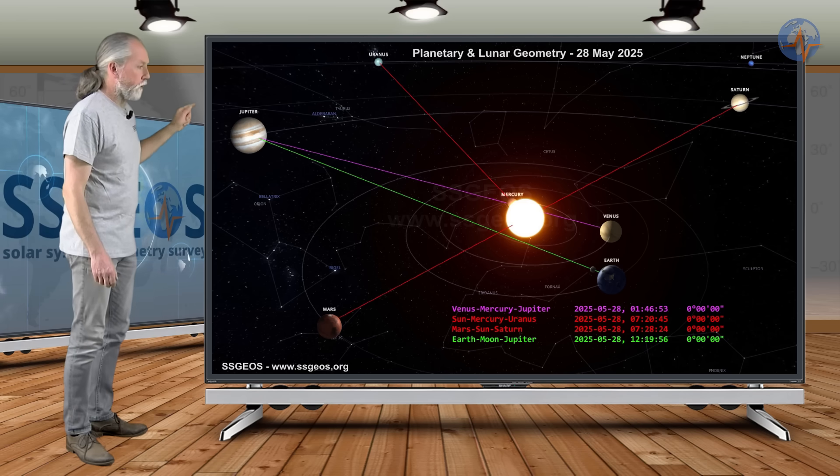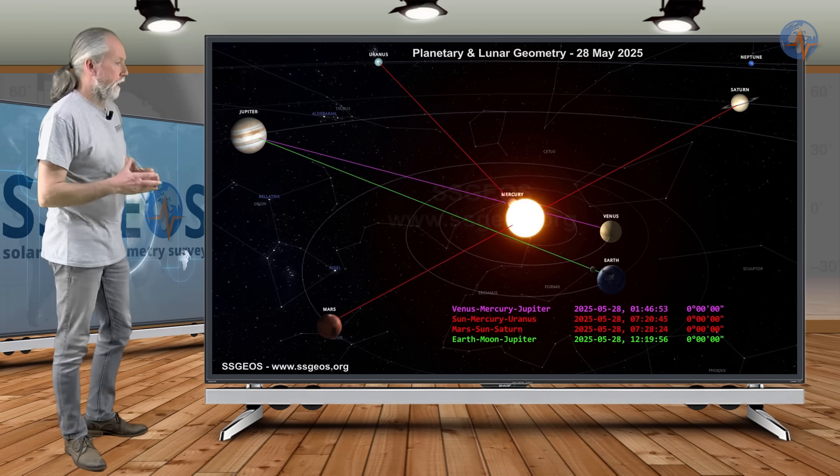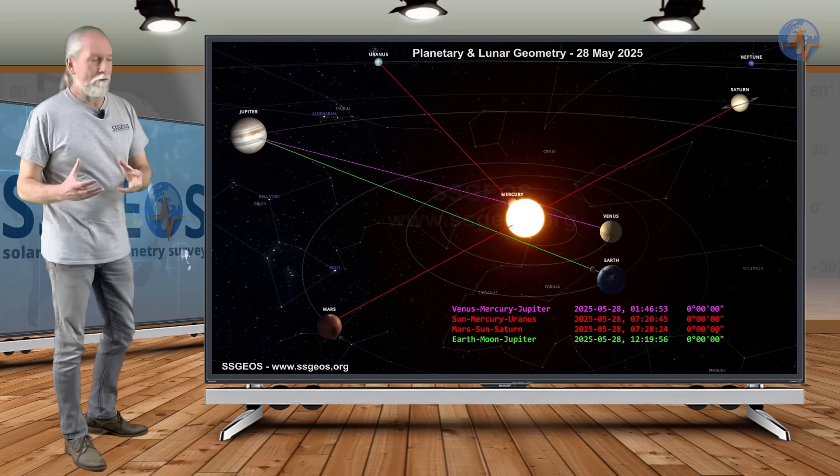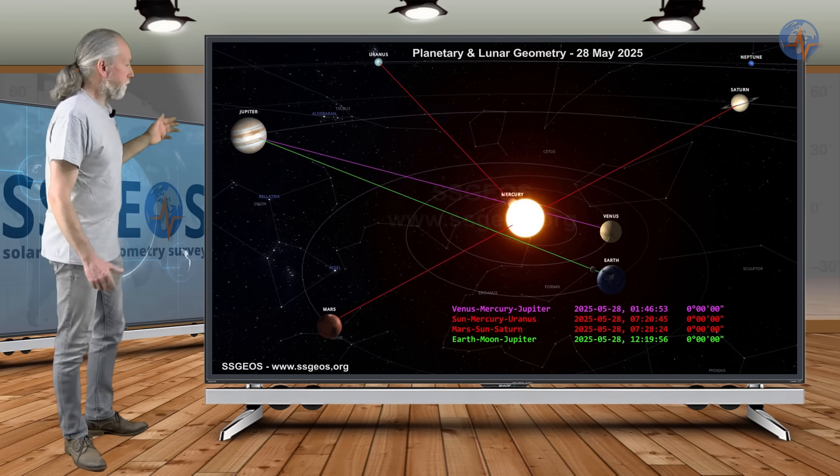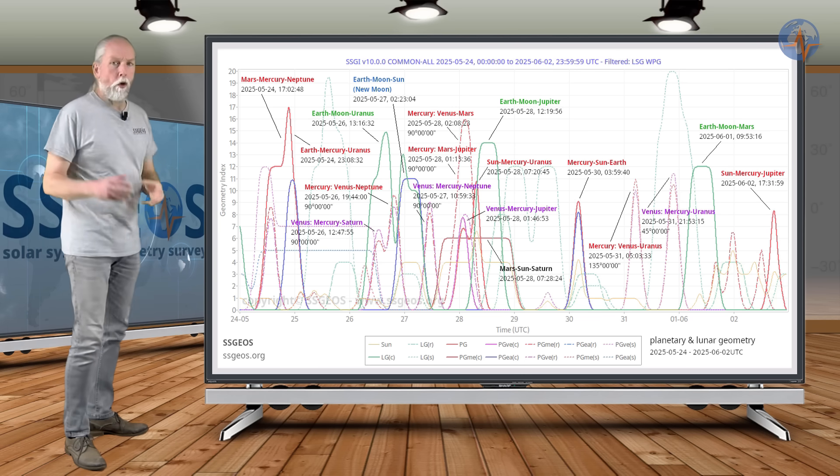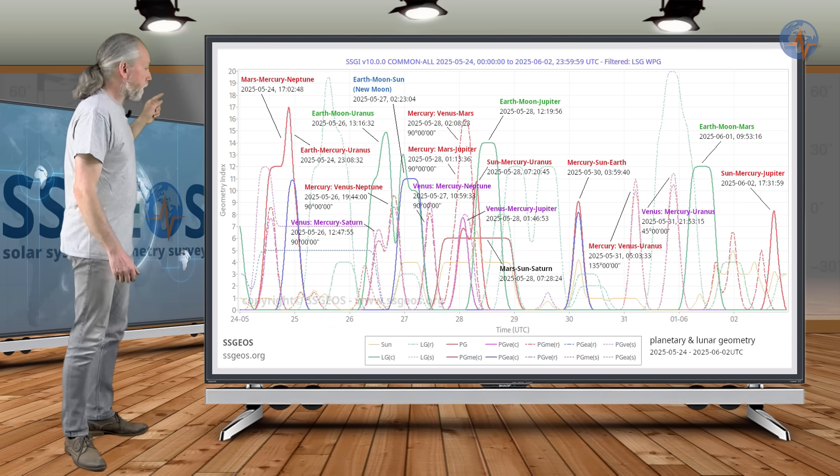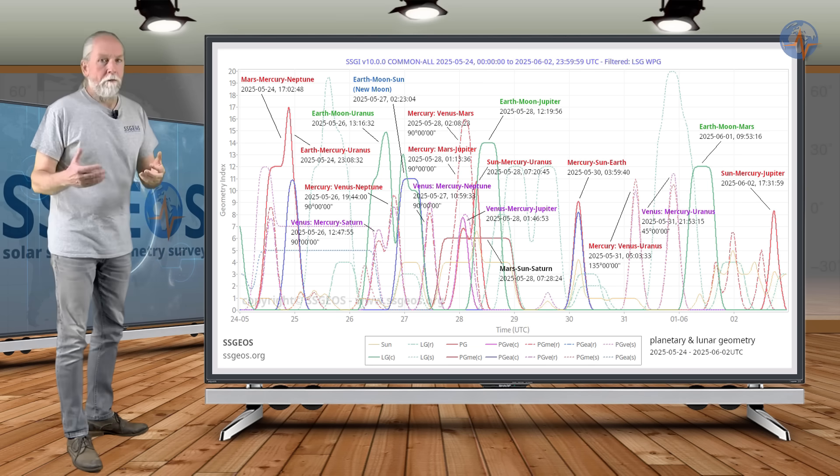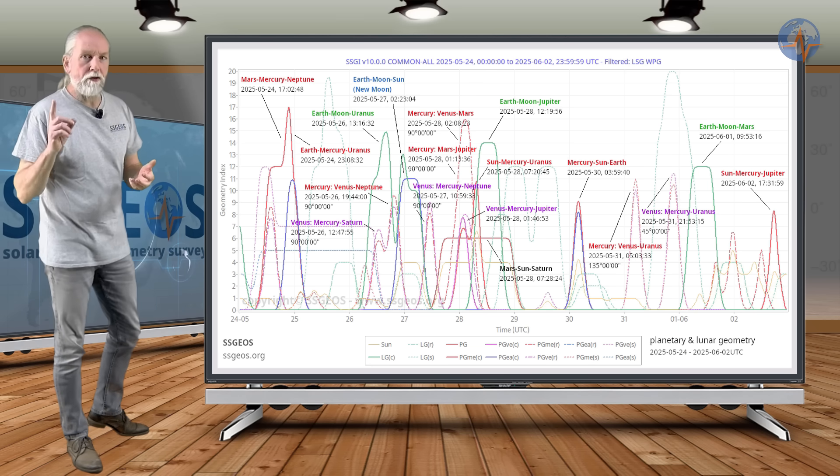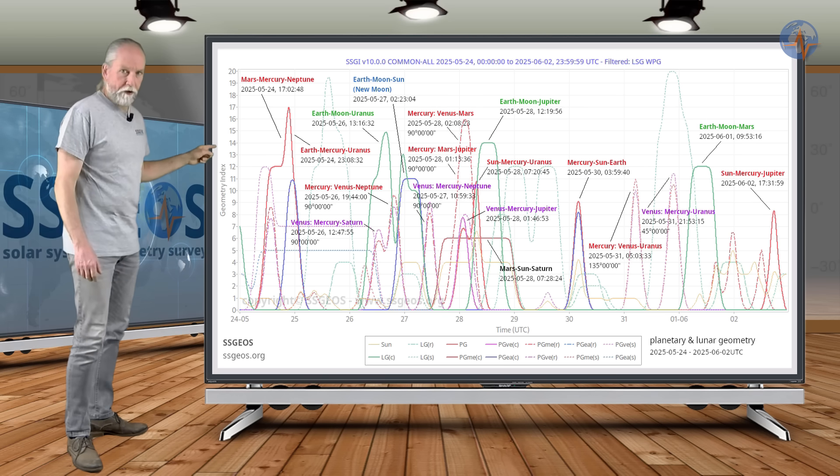So Venus, Mercury, Jupiter and Sun, Mercury, Uranus. That is a tight convergence there. And it happens at the same time as the lunar conjunction with Jupiter. And that means that we're probably going to see an obvious seismic response on the 29th and the 30th in the higher 5, maybe 6 magnitudes. And there could be a magnitude 7 in there around the 30th.